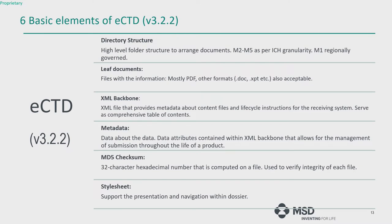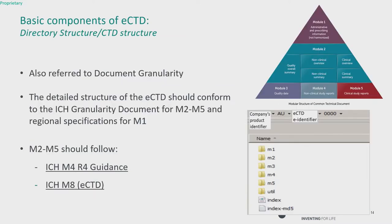Moving from top down through the basic elements, starting with document granularity. Modules 2 to 5 follow M4 guidance as well as M8 for eCTD. All modules with documents present will have folders; those without documents will not have a folder. If you are not submitting modules 3 and 4, you would only expect modules 1, 2, and 5. However, the UTU, INDEX, and INDEX MD5 files always come as a package for all eCTD dossiers — if any one of them is missing, something is wrong.